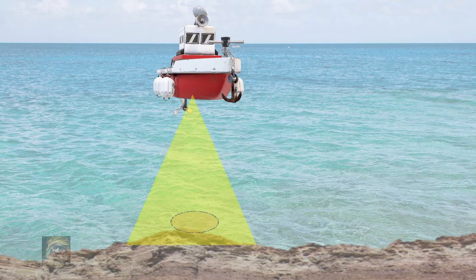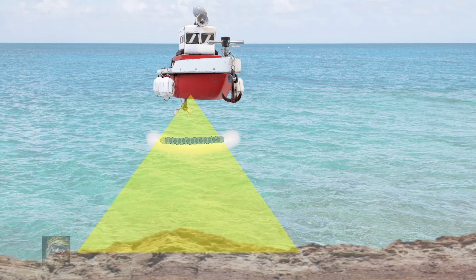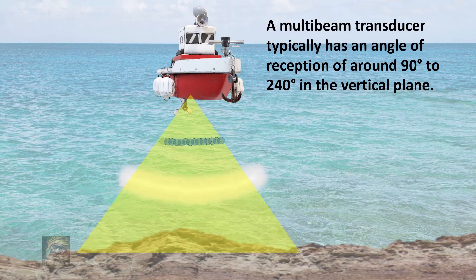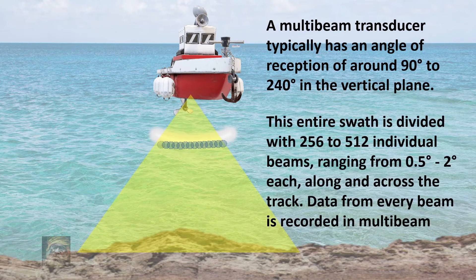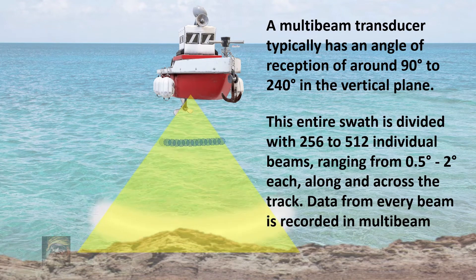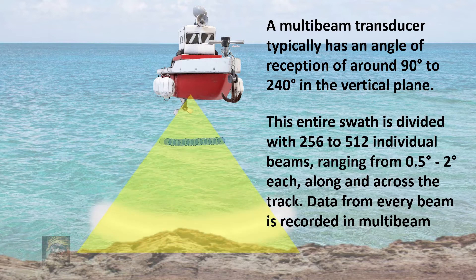For multi beam, the angle of reception is between 90 to 240 degrees in the vertical plane. The entire swath angle is subdivided into between 256 and 512 individual beam cones of 0.5 to 2 degrees each.